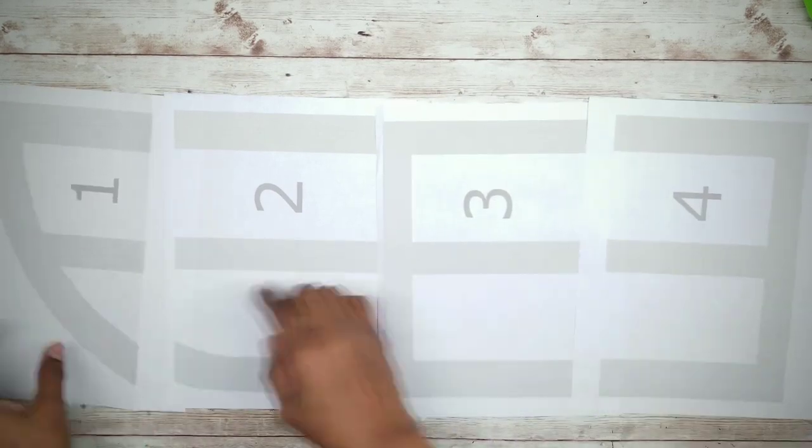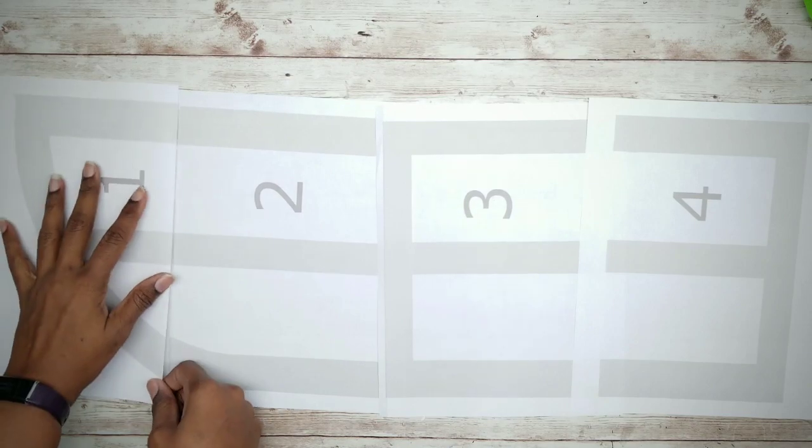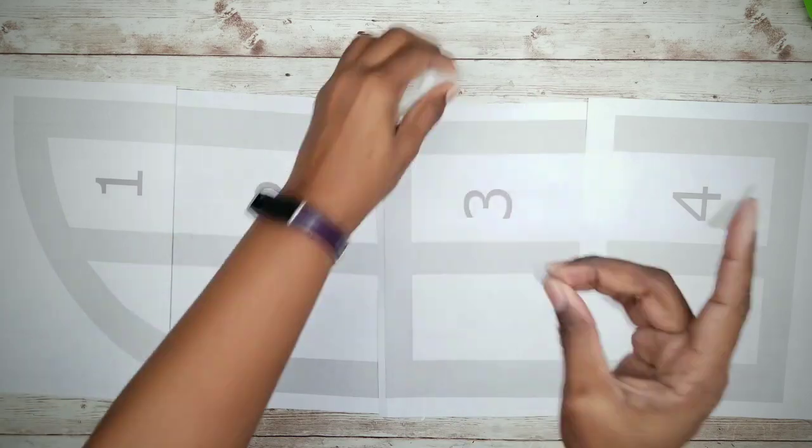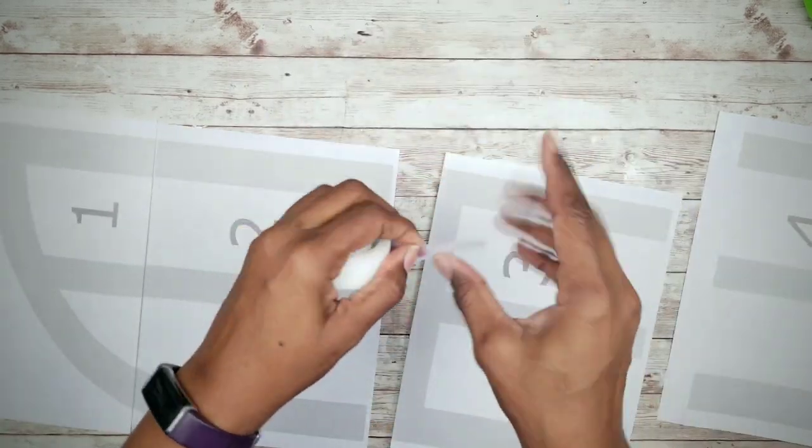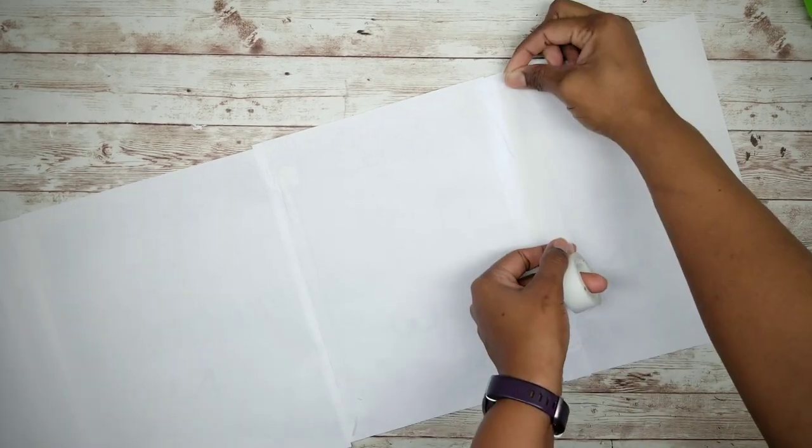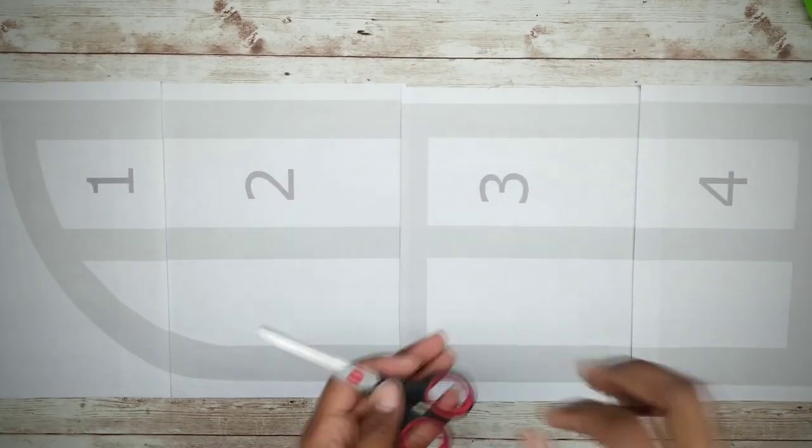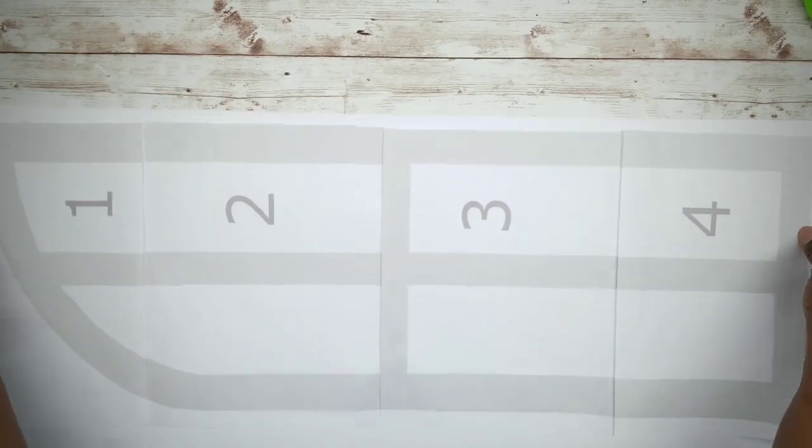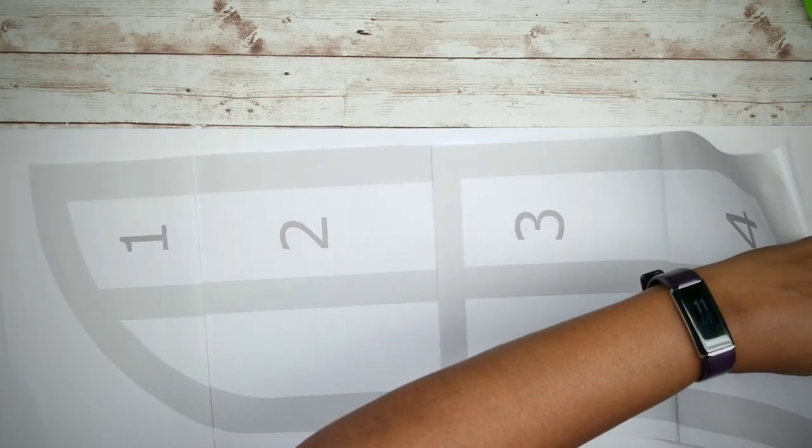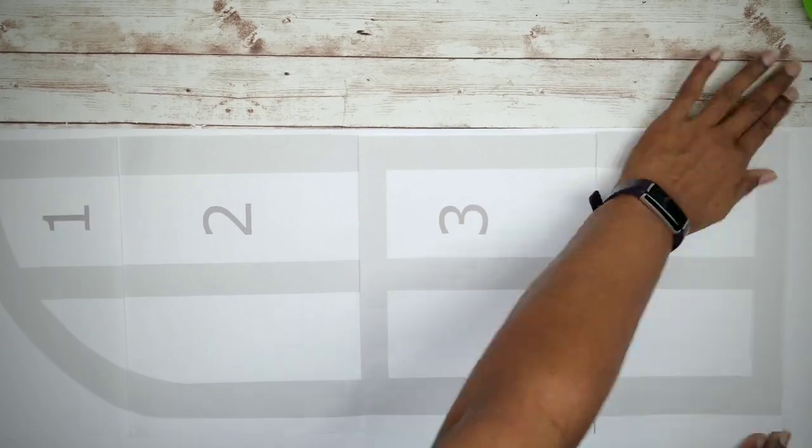Now to make the window, you want to print out the template provided in the description box below. The pieces are numbered for easy assembly. Now to put them together, just line up the outline of the frames by folding or cutting off those white ends and then taping them together as shown here. Once taped together, we want to flip that template over, and we want to apply tape along the seam to make sure it's all secured in place. So now I'm going to cut off that excess paper along that straight edge of the window frame.